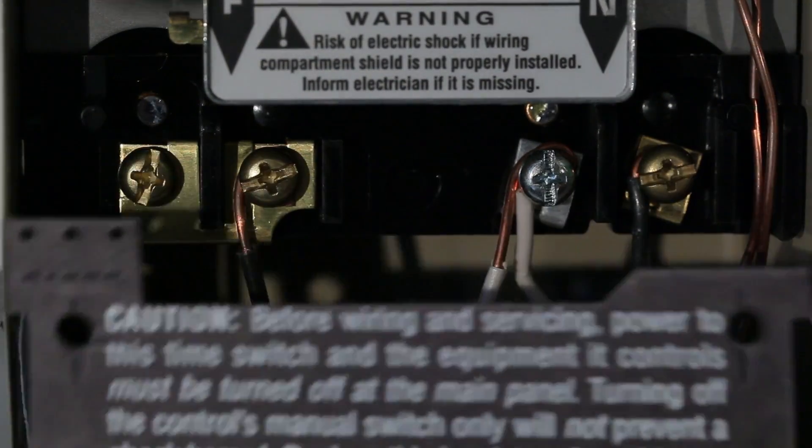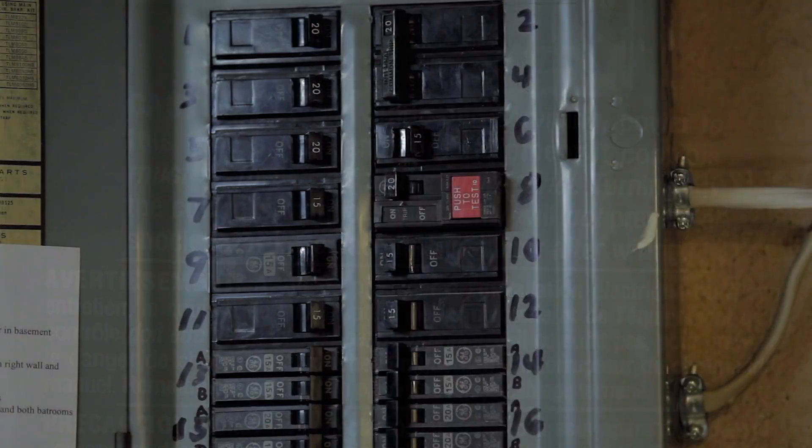Now replace the insulator panel and turn your breaker on at the main panel to power up your circuit.